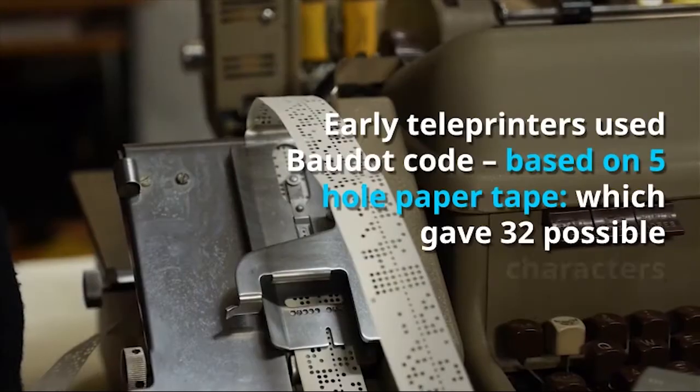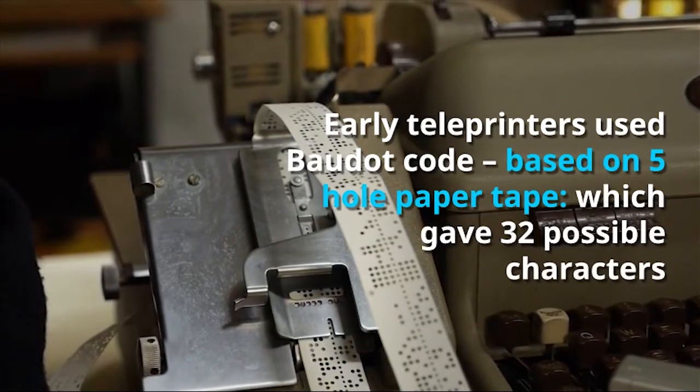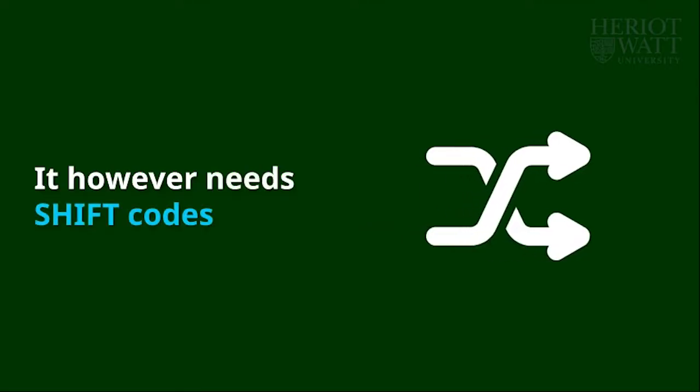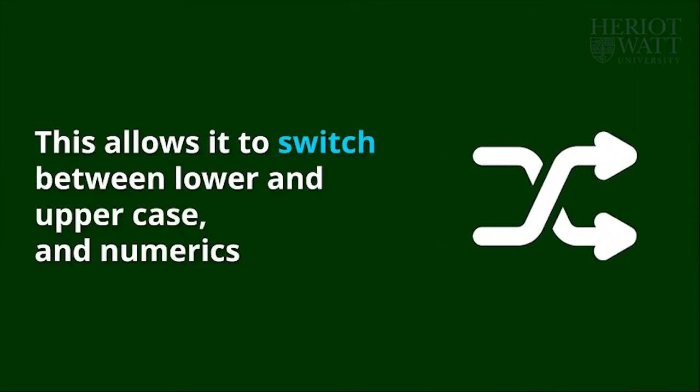Bodo Code. Early teleprinters used Bodo Code, based on 5-hole paper tape, which gave 32 possible characters. It, however, needs shift codes. This allows it to switch between lower and uppercase letters and numerics.